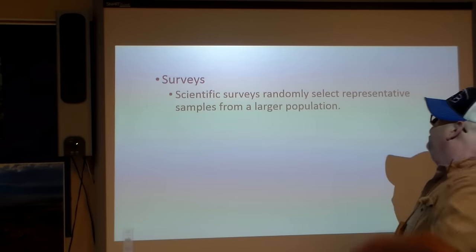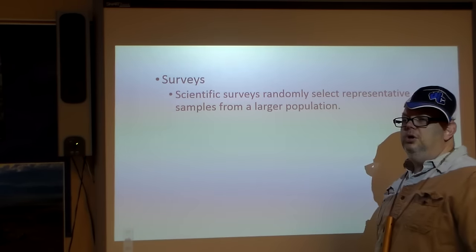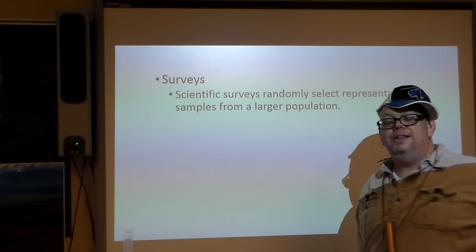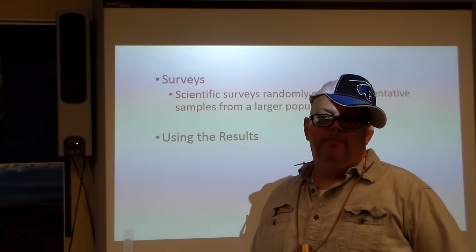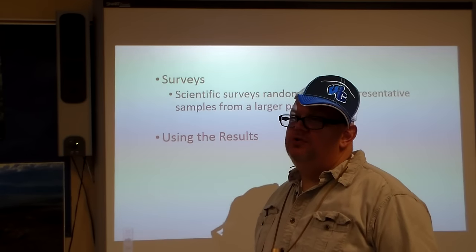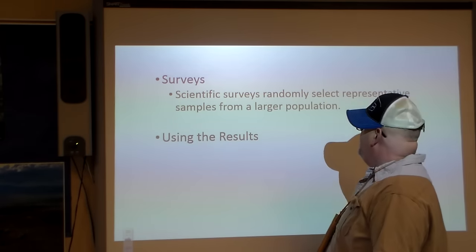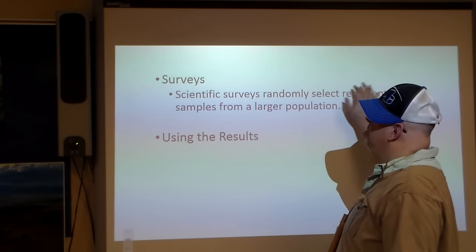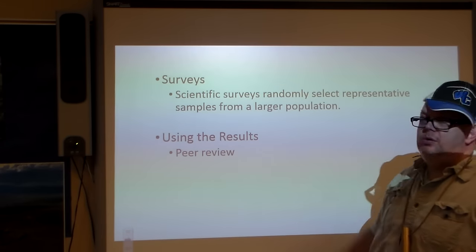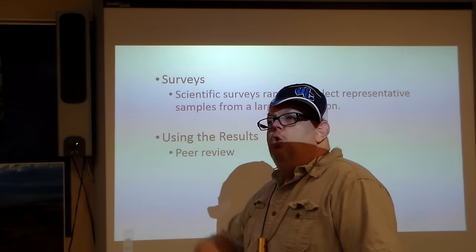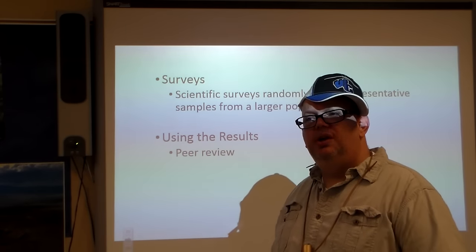There are surveys, where we can randomly select representative samples from a larger population. So if I look at the population of Western Christian High School and I'm surveying 25 freshmen, 25 sophomores, 25 juniors, 25 seniors, that's taking a small number, a representative sample from the larger population. Using the results, there's something called peer review. This is where scientists will share their information with other scientists so they can see, hey, is this legitimate or not?